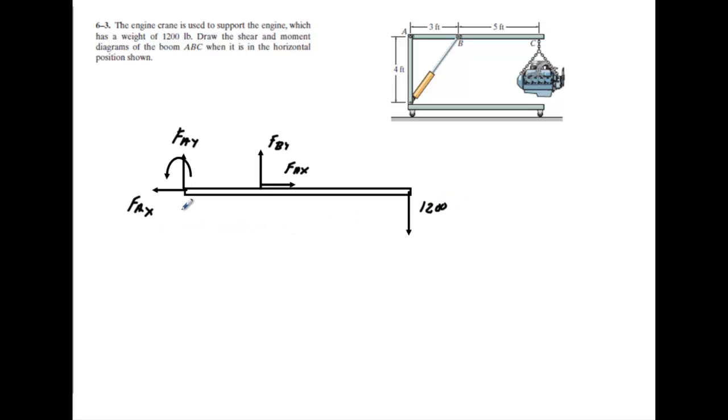Okay, so the first thing we're going to do here is we're going to take a moment around A. I sum my moment around A and set that equal to 0 because the object's not spinning. Then we can say anything that goes this way we're allowed to be negative. Anything that goes this way, we're allowed to be positive. All right, so then we're going to have negative 1,200 times this distance, the distance from here to here is going to be 8. All right, and then we could say plus F_B_Y times 3 must be 0.